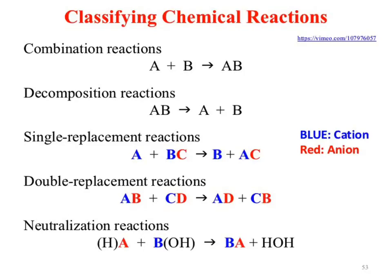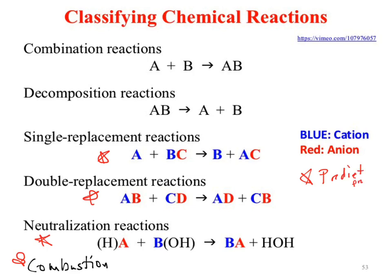The reaction types that get important are single replacement, double replacement, neutralization, and combustion. Those four reactions are a little bit more challenging than the rest, so we'll give them a star. They have stars because you are required to predict products, which makes them more difficult. Not only do you have to recognize them, but you have to predict those products for all four of those.